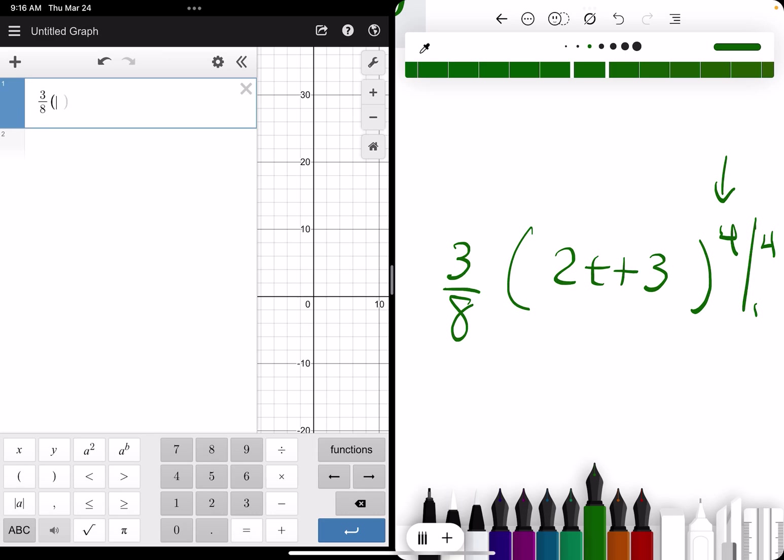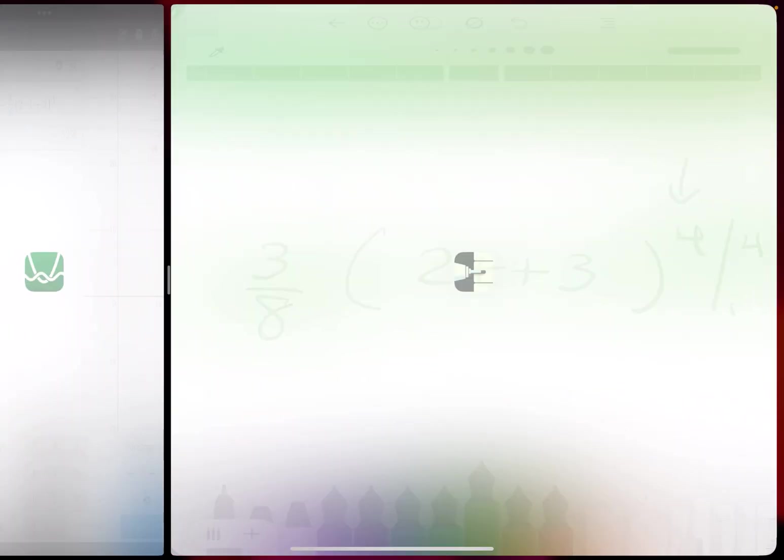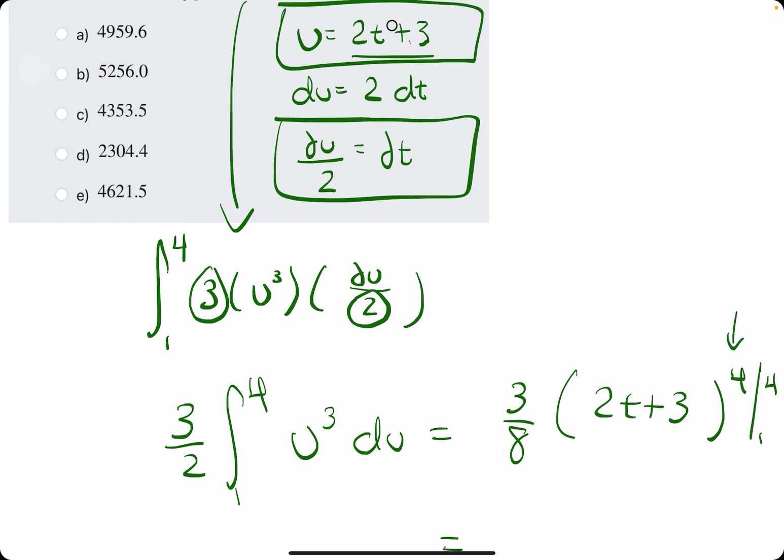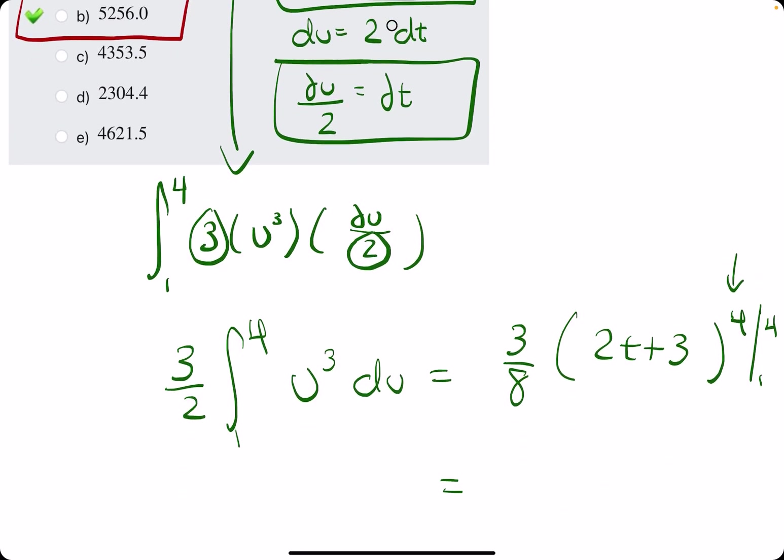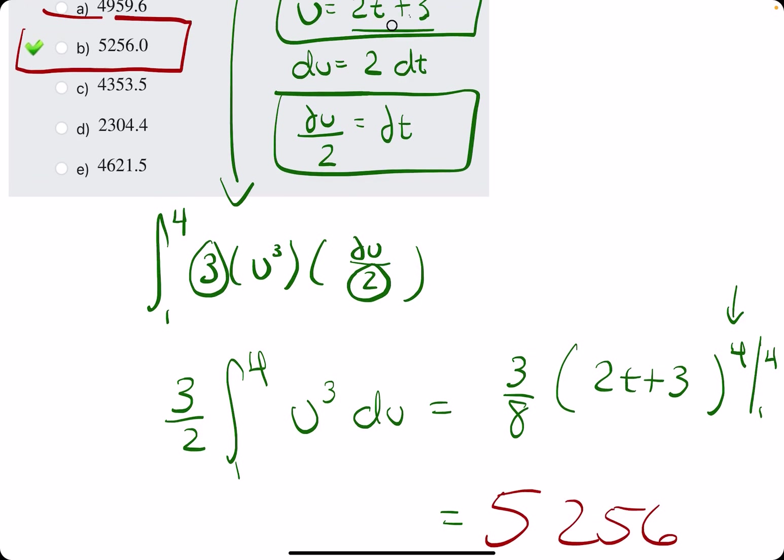It will make or break your answer. So, plugging in the upper bound first, the 4. So, we have 2 times 4 plus a 3. We close that off, and it's being raised to the fourth. Here's, that was where I, you know, messed up in the last one. I didn't raise it to the fourth. So now we plug in the 1, 2 times 1 plus 3. Close that off, raise that to the fourth. And now we have the evaluation at 4 minus the evaluation at 1. And we get 52, 56. 52, 56 looks like option B. And we break out the eraser to see that 52, 56 is our answer.